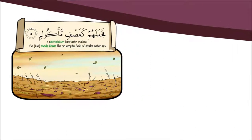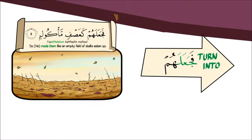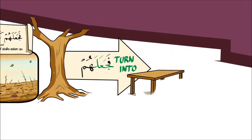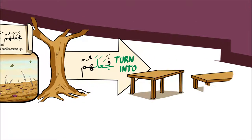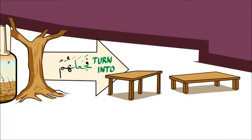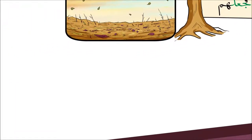Then we find these two words: عصفٍ فَجَعَلَهُمْ - then He made them, He transformed them. جَعَلَ in Arabic is used when you have something and you turn it into something else, like you take wood and turn it into a table. جَعَلَ, not خَلَقَ. خَلَقَ means you created out of nothing, but جَعَلَ means you took something and made it something else.